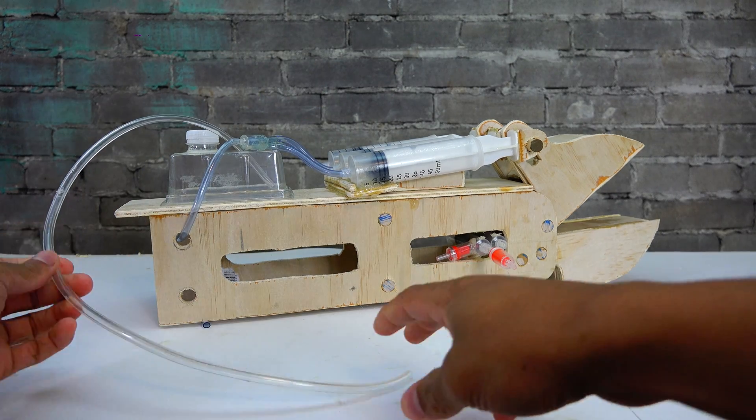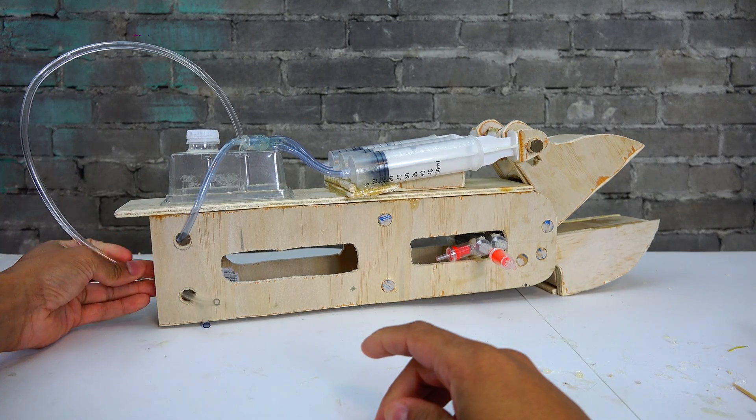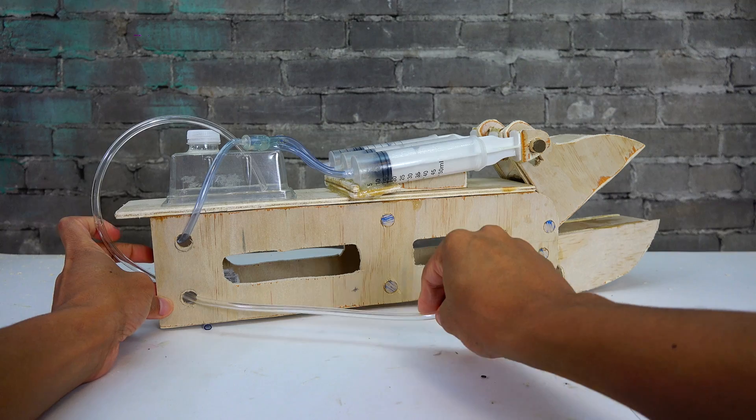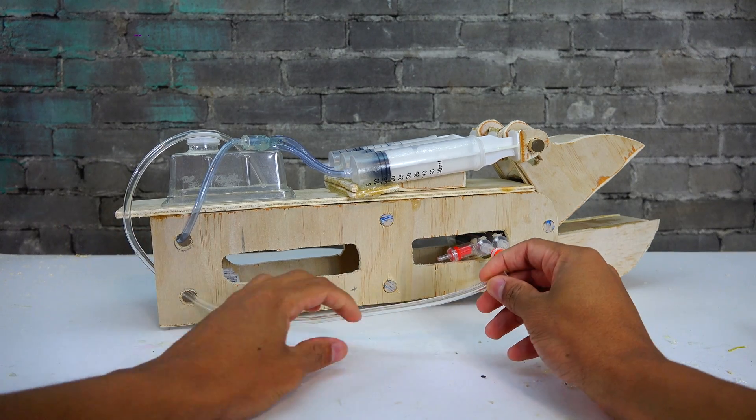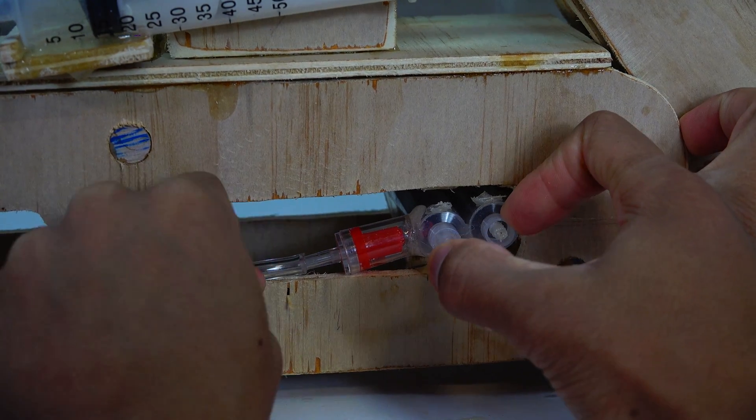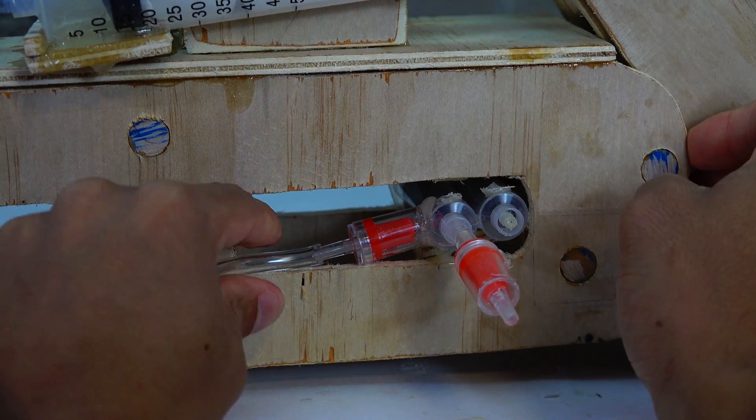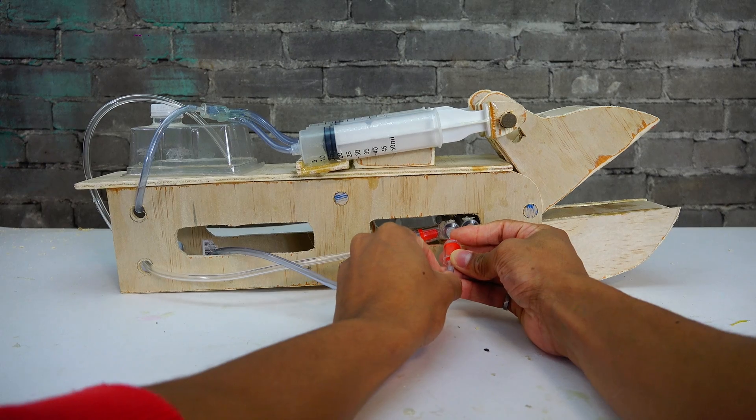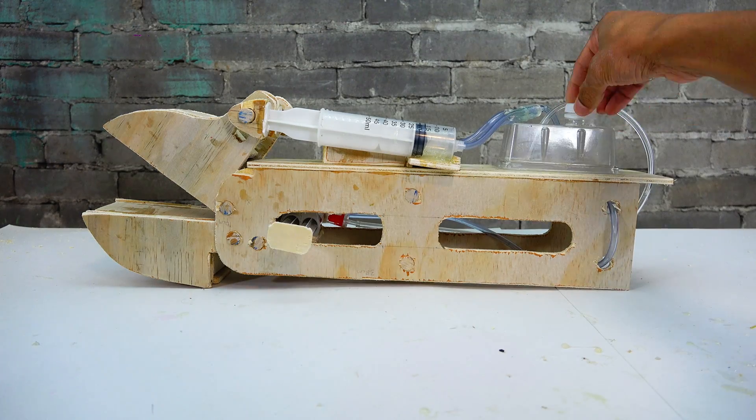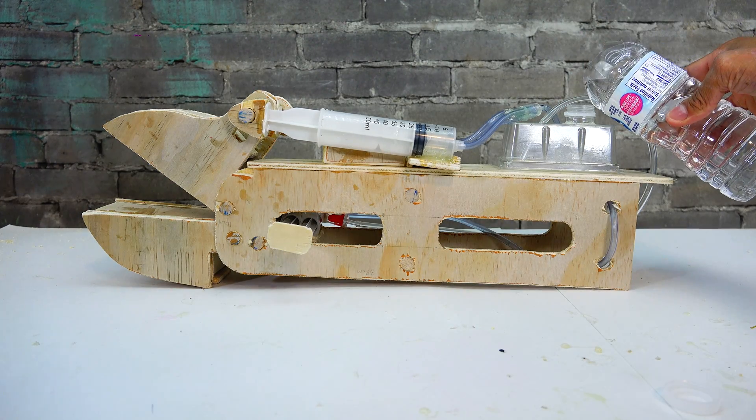And now we'll need a tube going right from there to our little pump syringe that we created. So basically when the small syringe moves outwards it draws water from the reservoir we created and then when we push it in it pushes the water from the syringe into the three larger syringes.